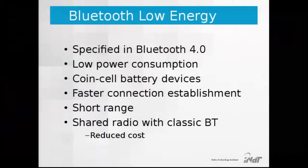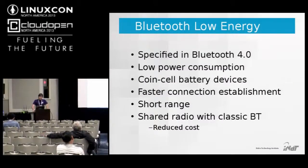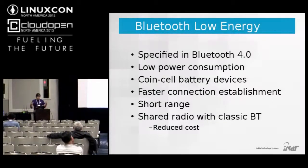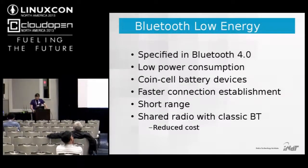In June 2010 version 4.0 of the Bluetooth specification was adopted. It's focused on low power consumption, enabling devices powered by coin cell batteries to communicate — the aim is to have battery life lasting one to two years. It also features faster connection establishment, saving power by having radios synchronize faster. It provides a 200 kilobits per second data rate and a range of about 50 meters.